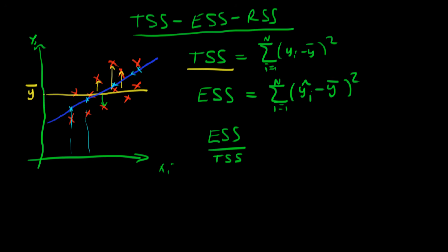So in reality, the explained sum of squares is less than the total sum of squares. So the explained sum of squares as a ratio of the total sum of squares is somewhere less than 1.